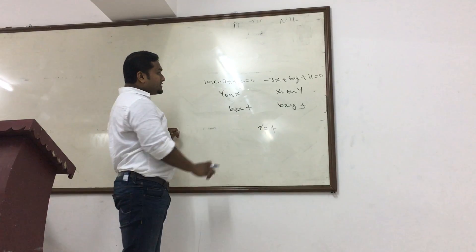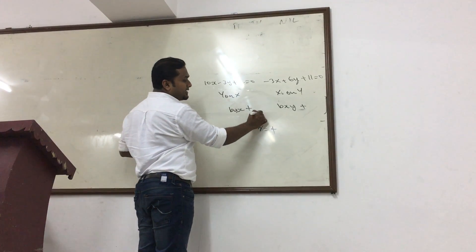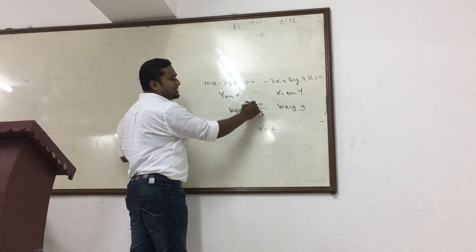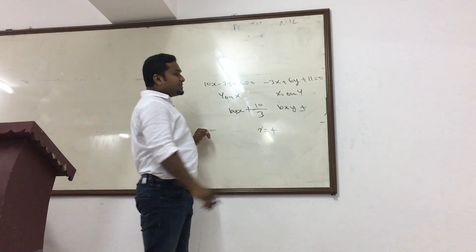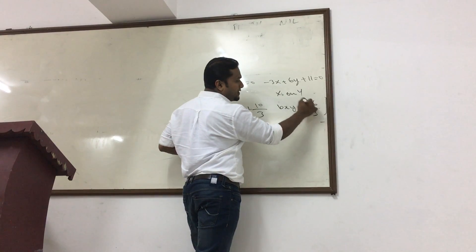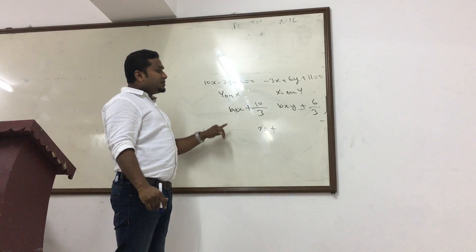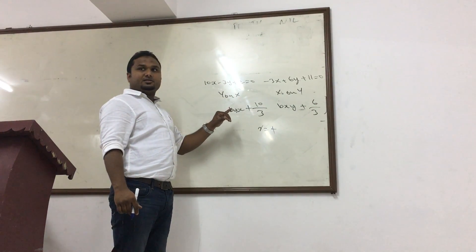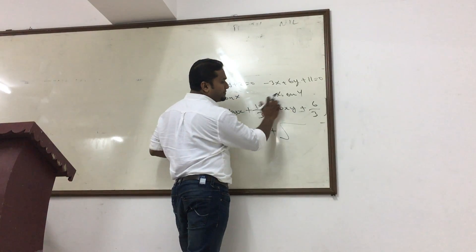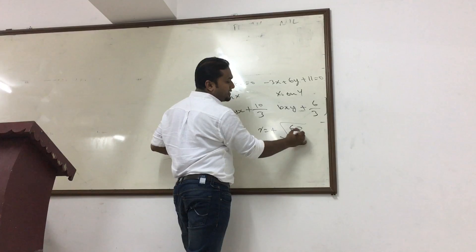If the first equation is BYX, the coefficient of Y is 3 going down and the coefficient of X is 10 going up. For BXY, the coefficient 3 goes down and 6 goes up. R is equal to the square root of BYX into BXY, so R equals the square root of the product.